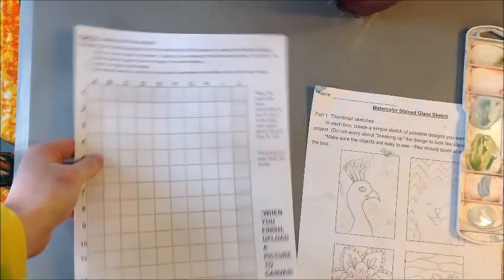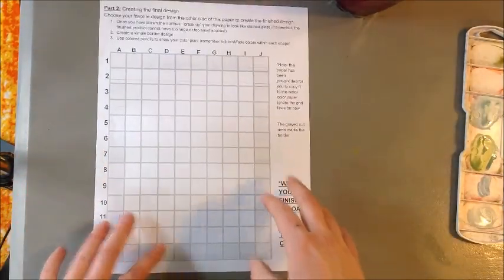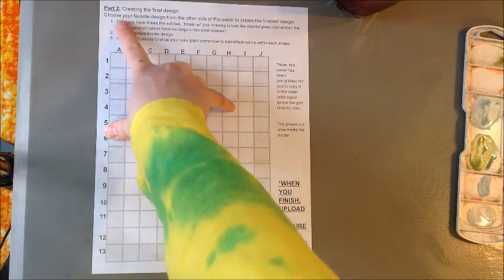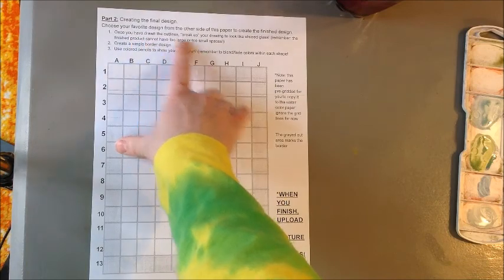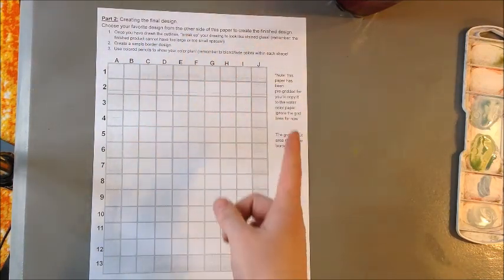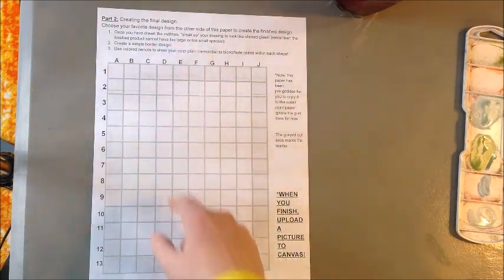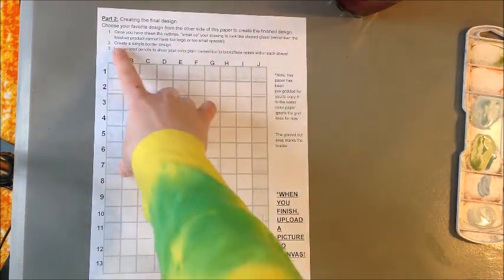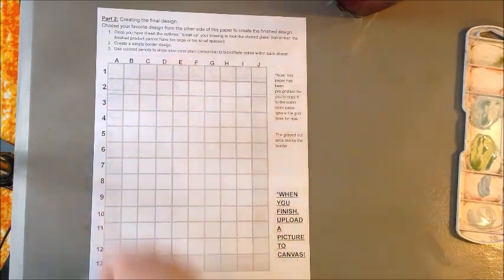So then on the back of your worksheet, you're going to do a more finished sketch of that one. So creating the final design. Choose your favorite design from the other side of this paper to create the finished design. Once you've drawn the outlines, break up your drawing to look like stained glass. That's important. Remember the finished product cannot have too large or too small spaces. You'll also create a simple border design and use colored pencils to show your color plan.